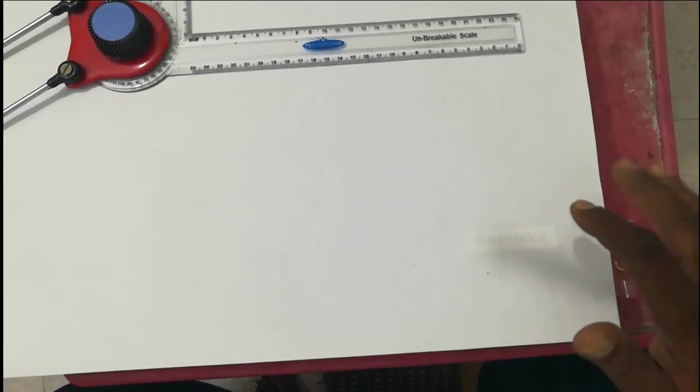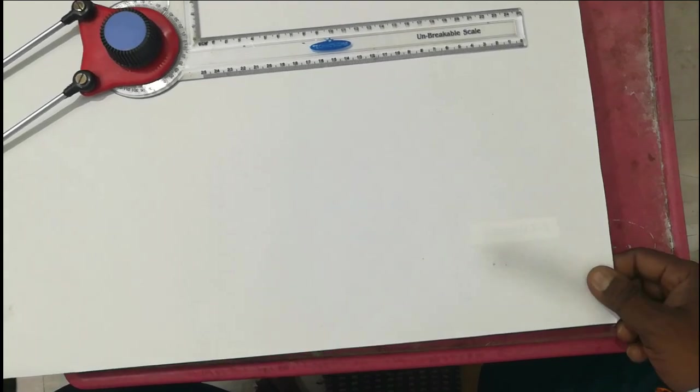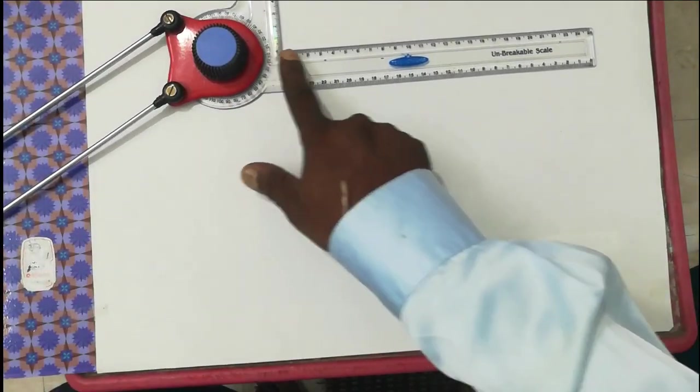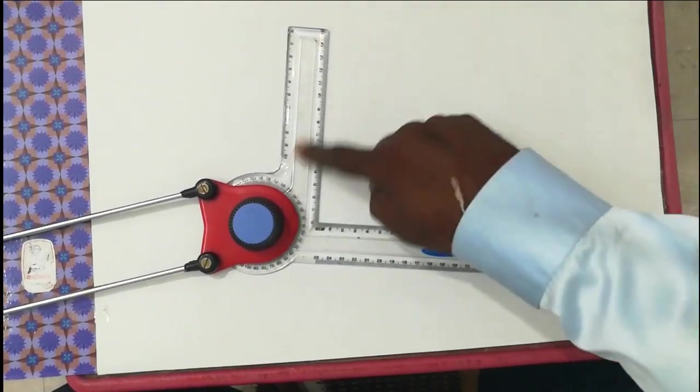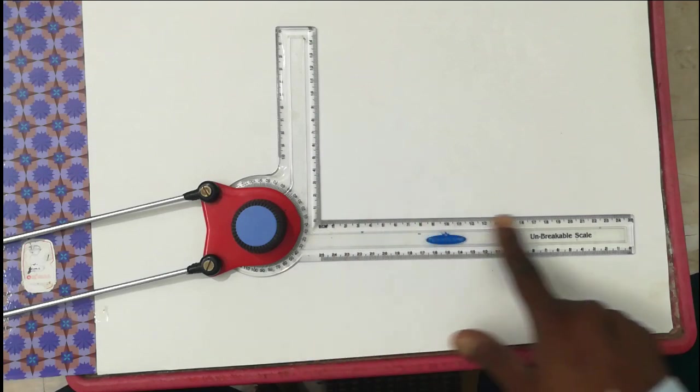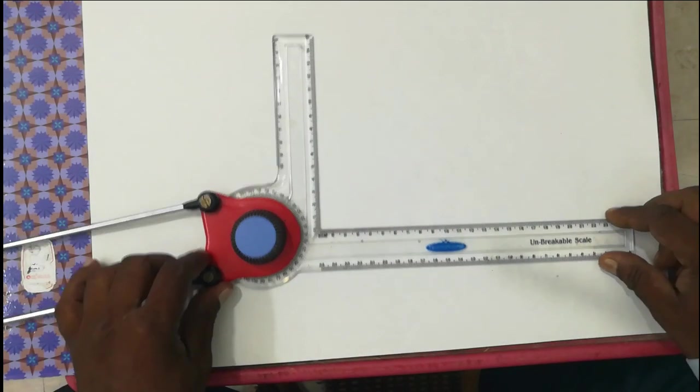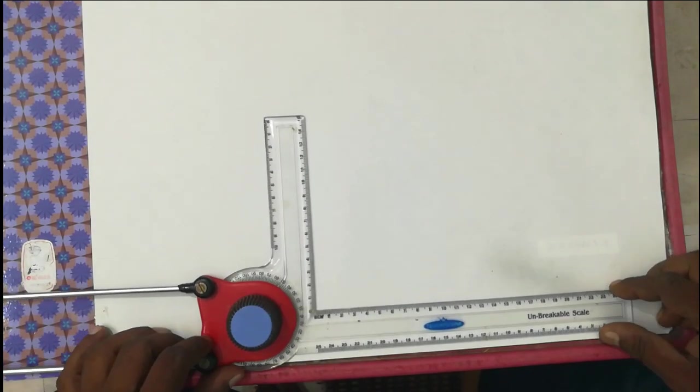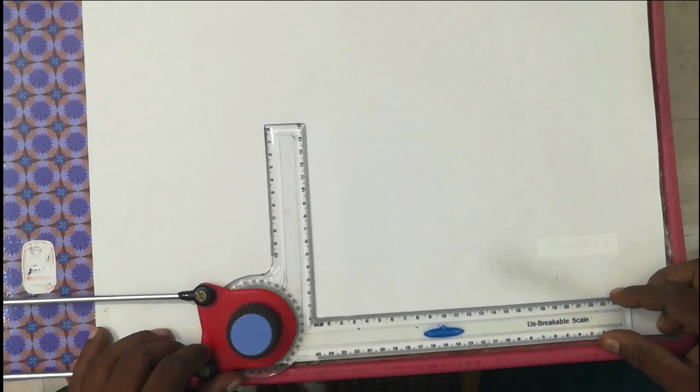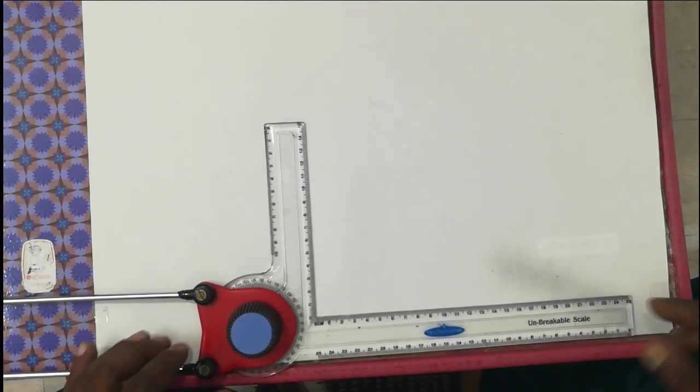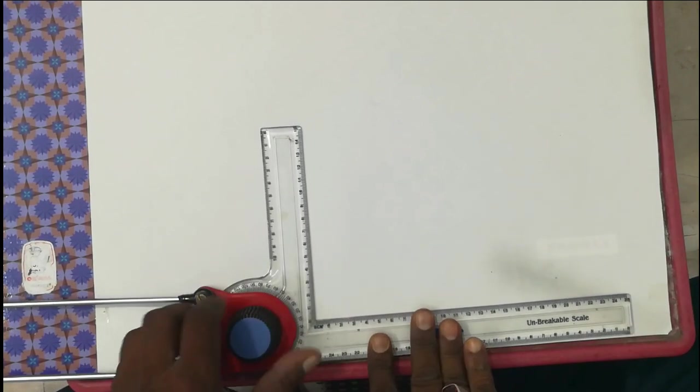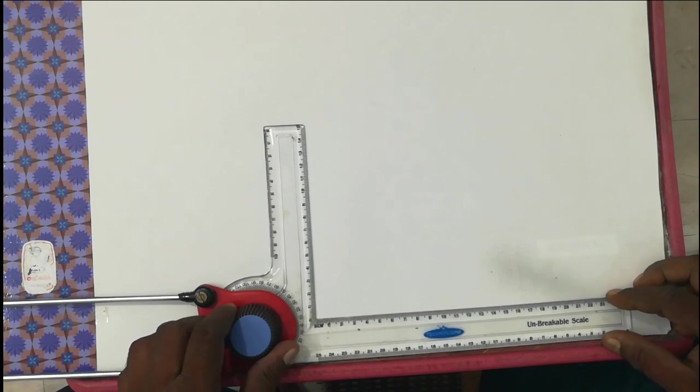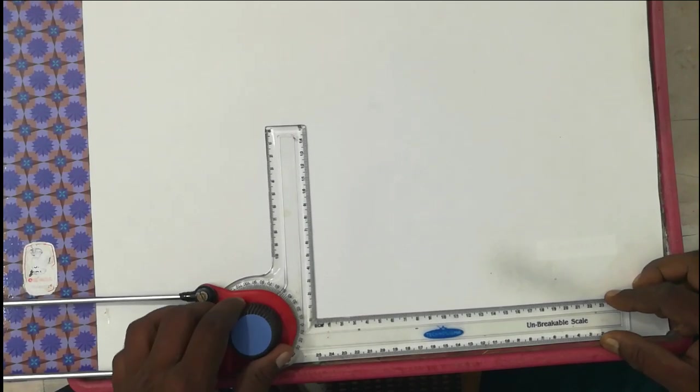At this point, this is a longer scale, this is a shorter scale. So this edge must coincide with this paper edge. Now you can move the drafter scale over the drawing sheet.